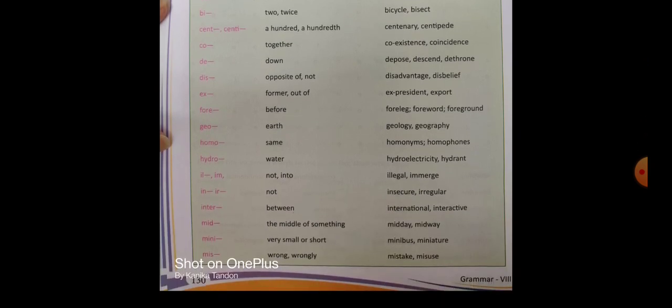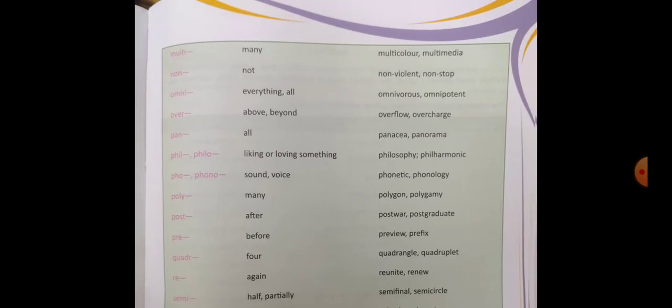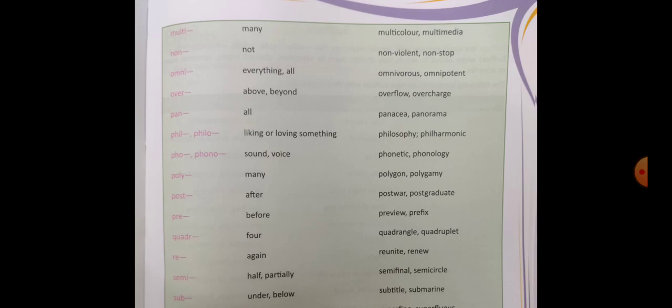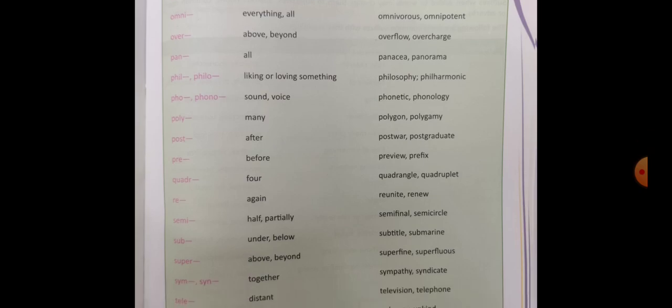There are different words that you have to read yourself, understand, and learn because you should know what they actually mean. I hope that prefixes are clear to you. These are the remaining examples: 'multi' means many — multicolor, multimedia; 'non' means not — non-violence, non-stop. All of these prefixes are very common. We very commonly use these words but most of us don't know that they are actually made by adding some other words to already existing words.